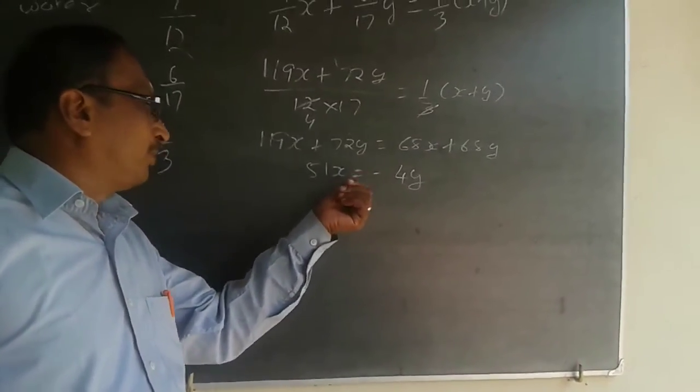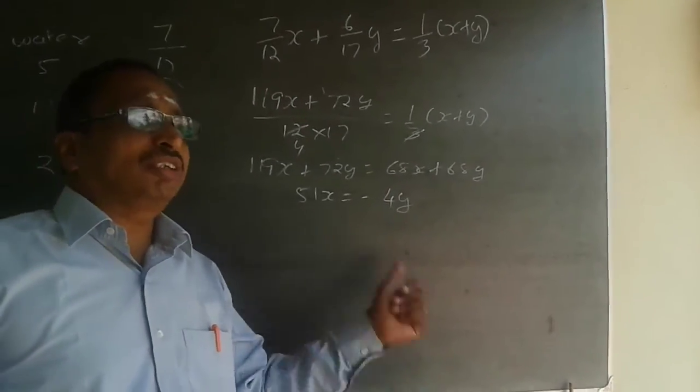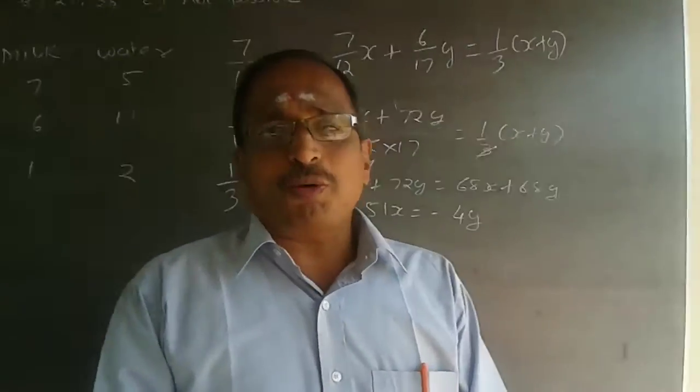Had this been plus 4, then x by y value will be 4 by 51. Because it is negative value, it is not possible for me to mix.